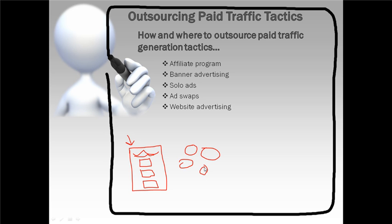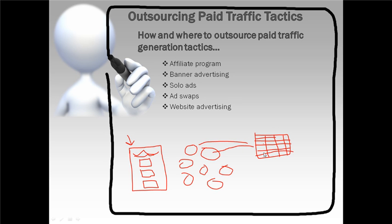You can also outsource getting affiliates. Pay your outsourcer to create a spreadsheet and start collecting all the names of potential affiliates. You can review it and mark who not to contact, leaving only the people you want them to reach out to. They can then go contact all those people to get them to promote your product. Having someone help you set up an affiliate program and recruit affiliates is hands down the best paid traffic tactic out there.